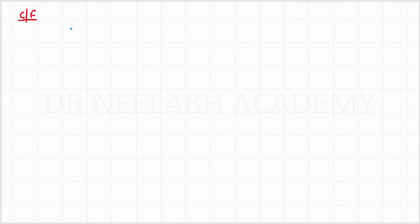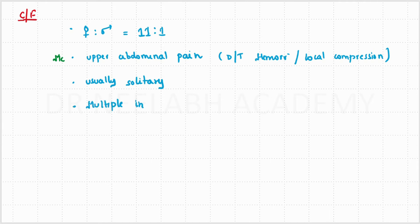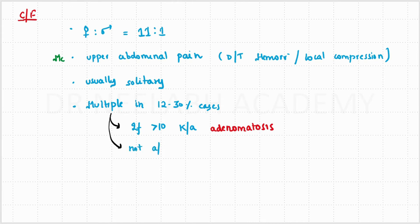Coming on to the clinical features, the female to male ratio is 11:1. The most common presenting complaint is upper abdominal pain, generally due to hemorrhage or local compression. These lesions are usually solitary, but in around 12 to 30% of cases they are multiple. Multiple lesions if more than 10 are called adenomatosis. Multiple lesions are generally not associated with OCP intake.